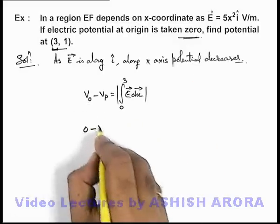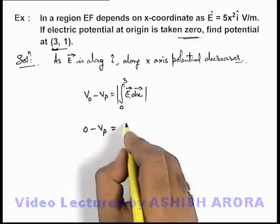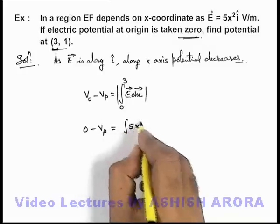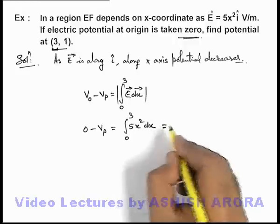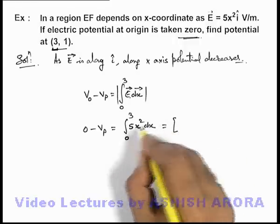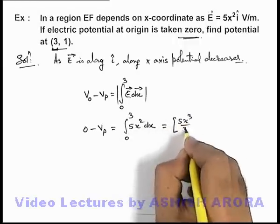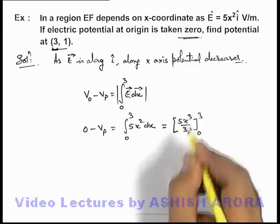So here it can be written as zero minus V p is equal to integration of 5 x square d x from zero to 3. So this will be, after integration we get 5 x cube by 3, limit from zero to 3.